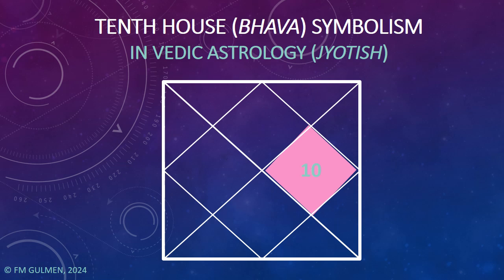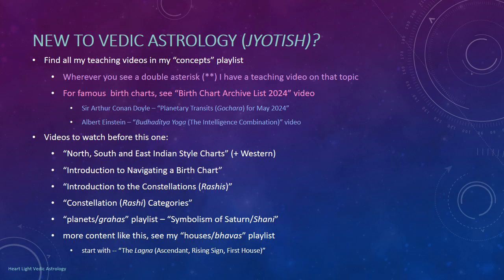In today's talk, I'm going to cover the 10th house or 10th bhava symbolism, from a Vedic astrology or Jyotish perspective. If you're new to Vedic astrology or my videos, all of my teaching videos on the subject are in my concepts playlist. Wherever you see a double asterisk in one of my talks, it means I have a teaching video on that topic if you'd like to learn more.